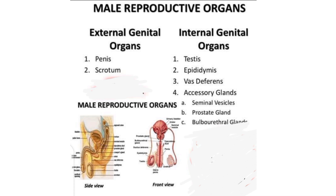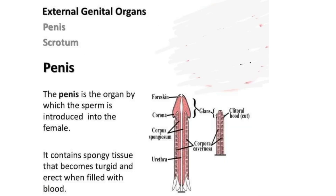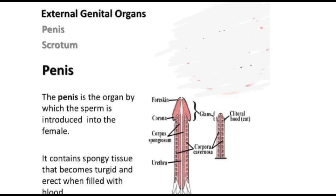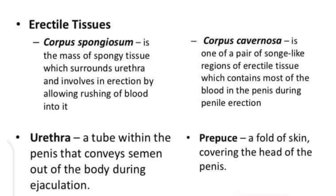The external genital organs are the penis and scrotum. The penis is the organ by which sperm is introduced into the female. The penis consists of three parts: the root, the body or shaft, and the glans. The root is the part that is attached to the wall of the abdomen.